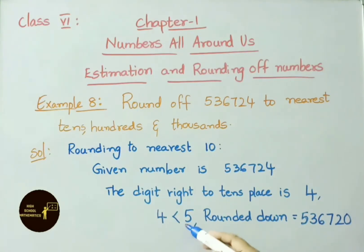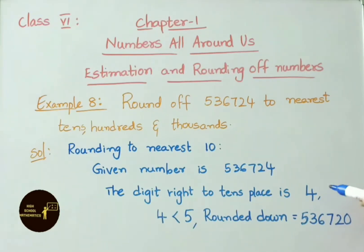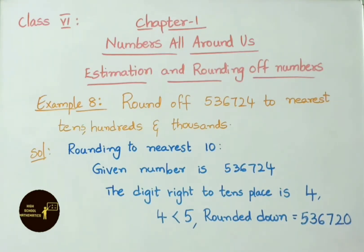If the digit is greater than 5, we have to change the 10s place value to the next 10. For example, suppose instead of 4 we had 6 — we would change the 2 to 3, writing the next 10 value there. Now let us see rounding to nearest 100s and 1000s.